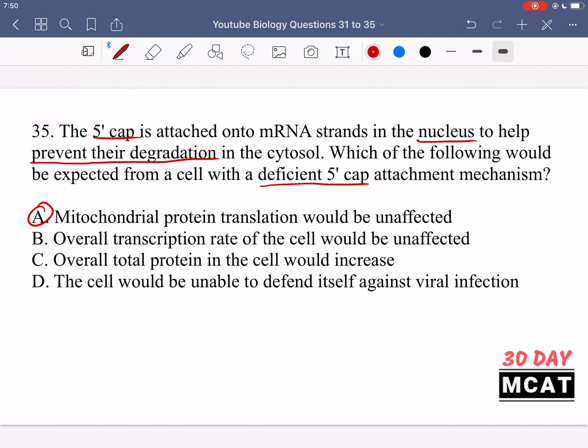Just because a mechanism is deficient in the nucleus doesn't mean that it's going to affect the mitochondria in any way because it uses its own mechanisms and enzymes. We can pretty confidently say the mitochondrial protein translation would be unaffected unless there's also something wrong with the enzymes in the mitochondria as well. But we have no information saying that.